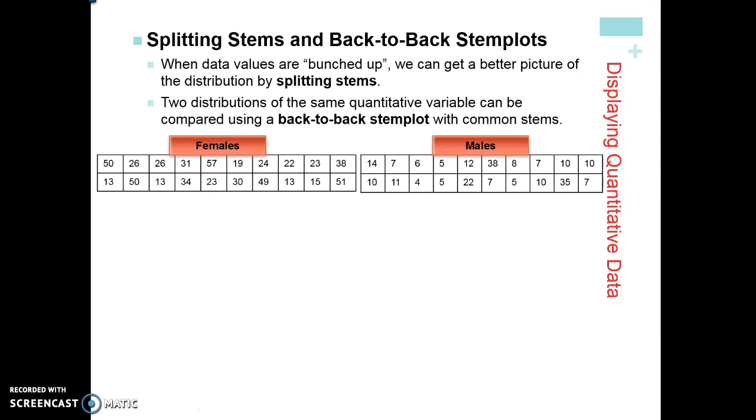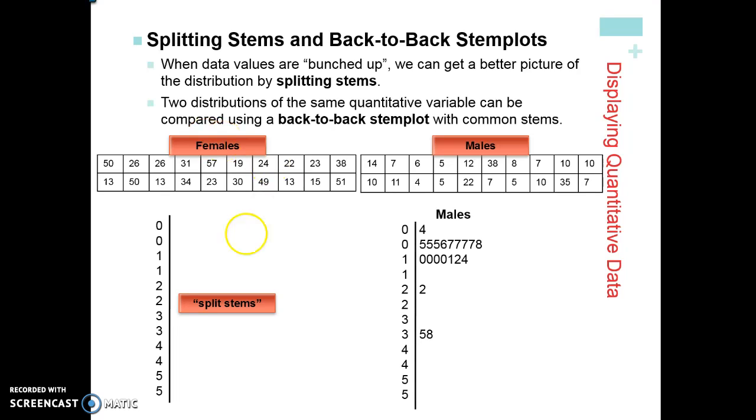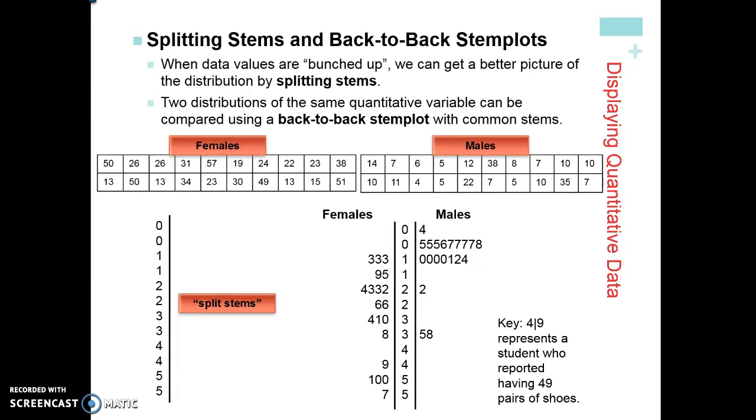Let's take a look at the difference between males and females with the number of shoes that they own. Split stems looks like this where I have two zeros, two ones, two twos, two threes, two fours, just so it's not quite so bunched up. Same thing with the males - notice if I had all of these with the zeros that list could be pretty big. With the females, we split the stems and now we're putting them with a back-to-back stem plot on the other side. This allows us to compare the distribution really easily, so we can obviously see that males have a much lower number of pairs of shoes than the females do. It's very easy to see what the largest number is for females, which is 57, versus the males, which is 38. Back-to-back stem plots give us a good comparison of data. Always make sure you include your key and your title on the top.